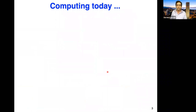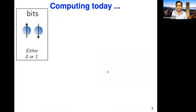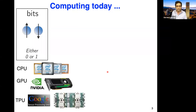Let's say a few words on computing today before I begin. We're all familiar with the idea of a bit — a deterministic object that is either zero or one. This is the workhorse of digital computing. What realizes the bit is the amazing devices that Moore's law enabled: CPUs with billions of transistors, GPUs, TPUs, and all sorts of new devices with billions and billions of transistors.